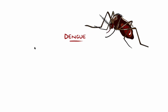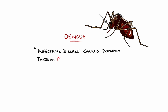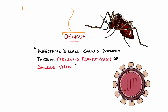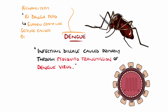Dengue fever is an infectious disease caused by transmission of the dengue virus. One origin for the name is thought to come from a Kiswahili term 'Kidinga Pepo', meaning sudden cramp-like seizure caused by an evil spirit.